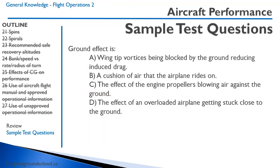Ground effect is: A wingtip vortices being blocked by the ground reducing induced drag; B a cushion of air the airplane rides on; C the effect of engine propellers blowing air against the ground; D the effect of an overloaded airplane getting stuck close to the ground. Option B is not correct — there is no cushion of air. The definition of ground effect is wingtip vortices being blocked by the ground, reducing induced drag. Answer: A.